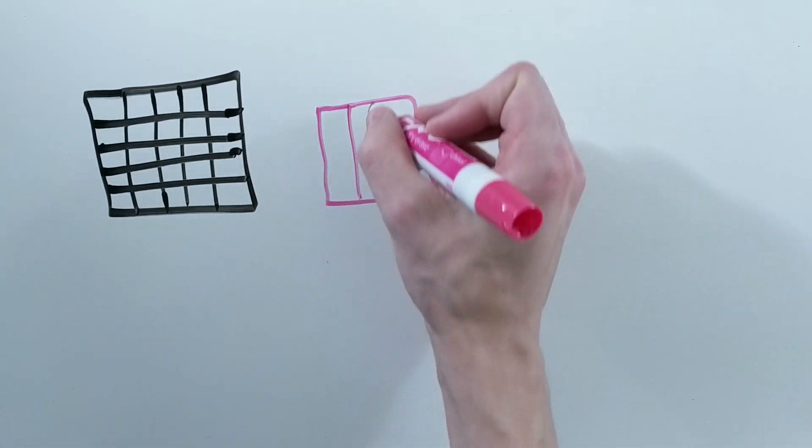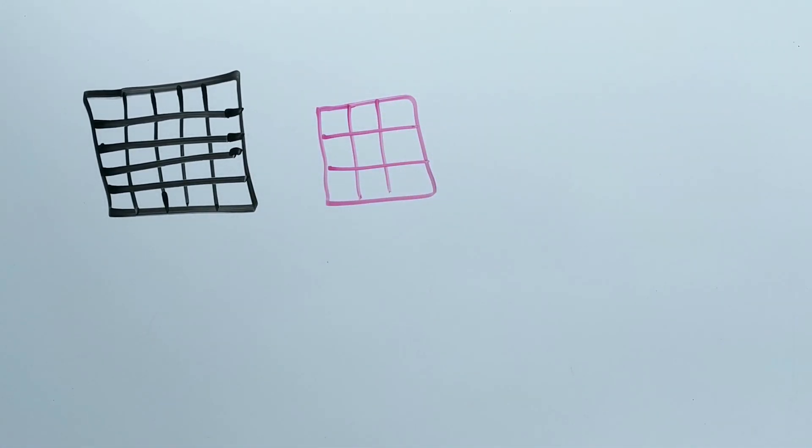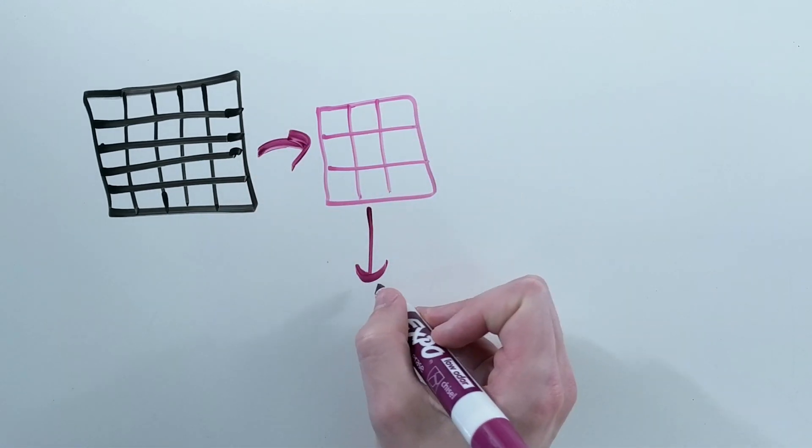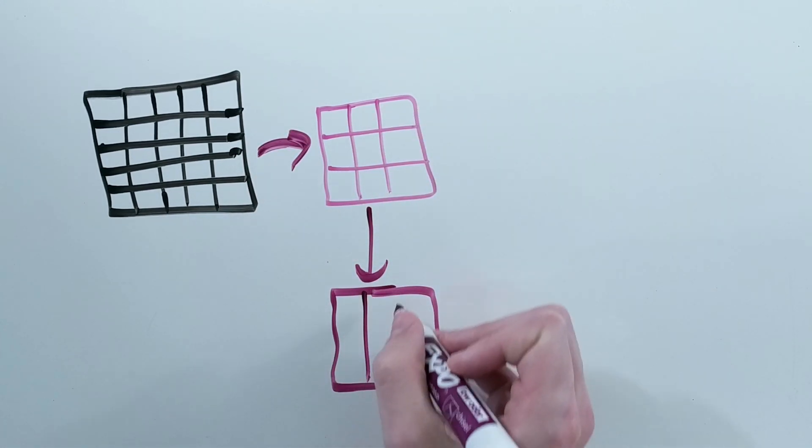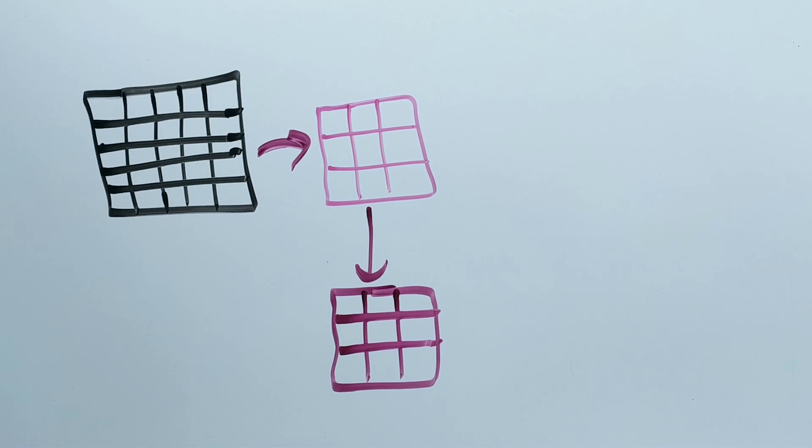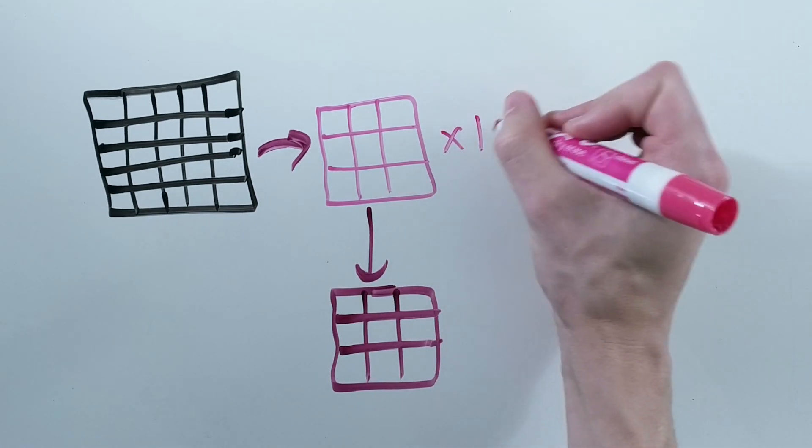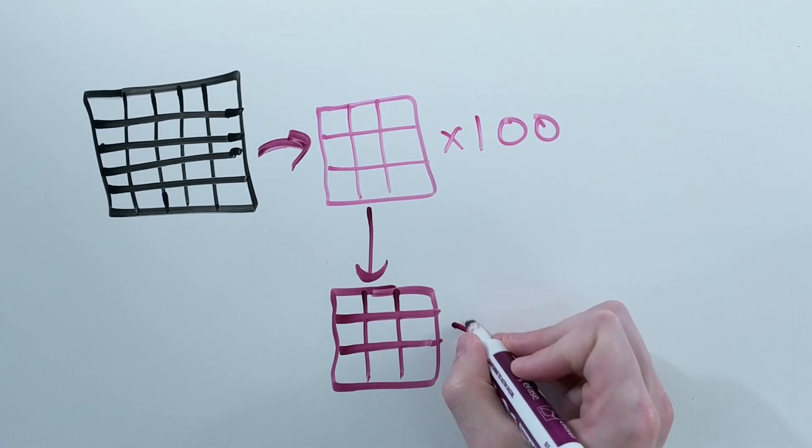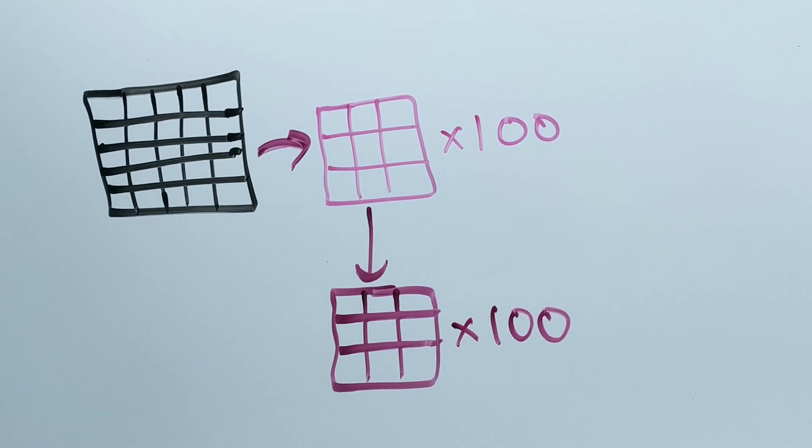But that was just the computation for one filter. Convolutional layers usually have many filters. So this process repeats for each filter, so for one 5x5 matrix as input and 100 filters, you will get 100 matrices as the output.